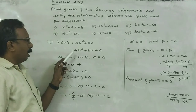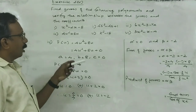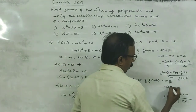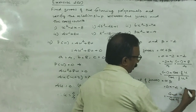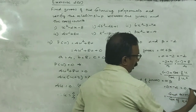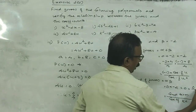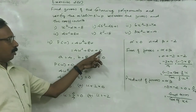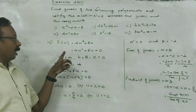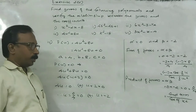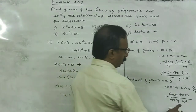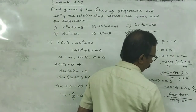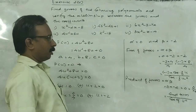Similarly, alpha beta is 0 into minus 2, which is 0. And 0 can be represented as 0 by 4. Here 0 is the constant term — constant term divided by coefficient of U squared. In the last question, write coefficient of S divided by coefficient of S squared, and constant term divided by coefficient of S squared.